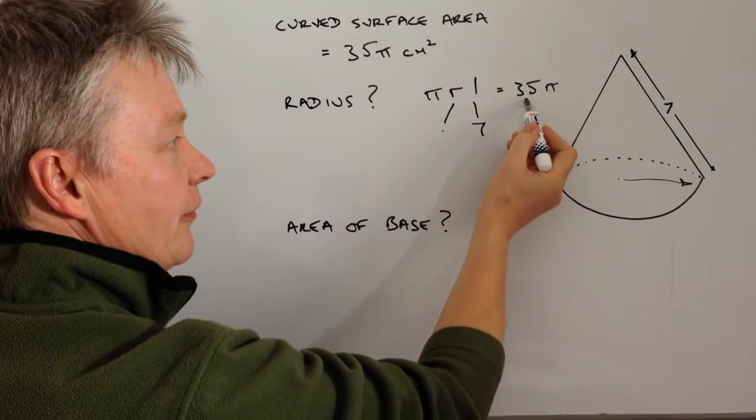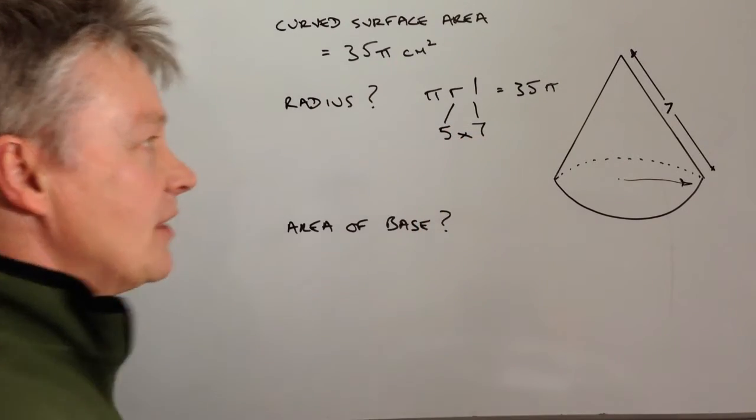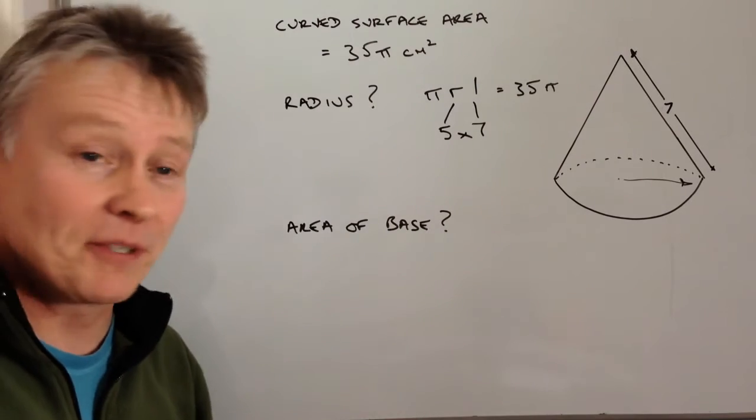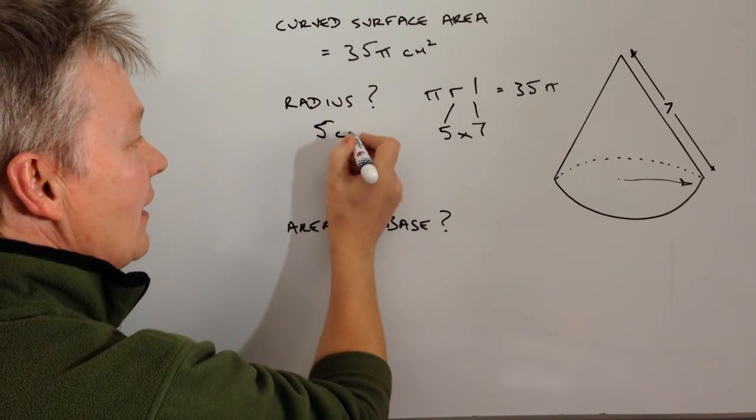Well to make 35 it's going to be 5 times 7, so therefore the radius must be, in this particular case, 5 centimeters.